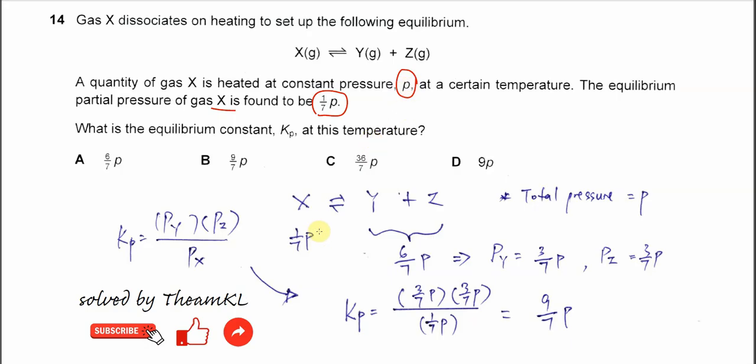Since it's given the partial pressure of X is 1 over 7 P, therefore we know that Y and Z together must be 6 over 7 P, because together X, Y, Z, it must be P.